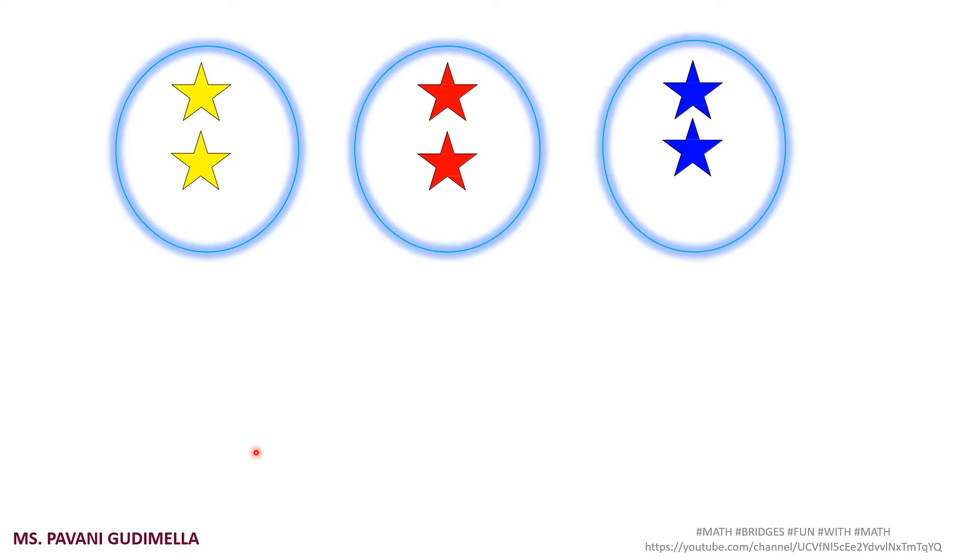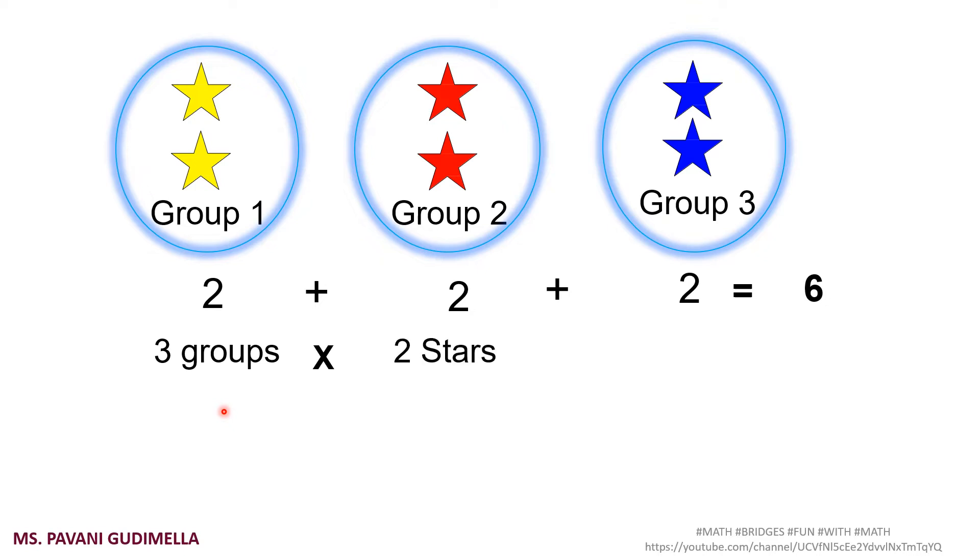Let's check with an example. You can see here there are 2 yellow stars, 2 red stars, and 2 blue stars. If we group them, we got 3 groups. That means group 1, group 2 red stars, and group 3 are the blue stars. That means it is 2 stars plus 2 stars plus 2 stars which is equal to 6. This is known as repeated addition. That means over and over again, if you are adding the same number, it is called repeated addition.